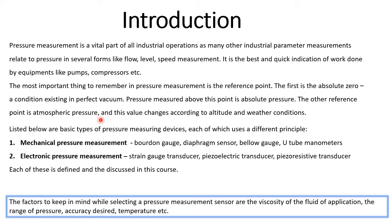The other reference point is atmospheric pressure, which changes according to altitude and weather conditions. The pressure that is measured above atmospheric pressure is known as gauge pressure.